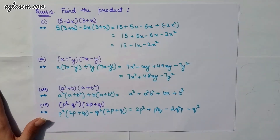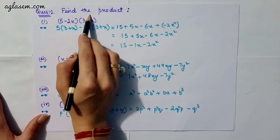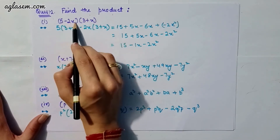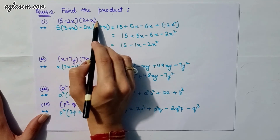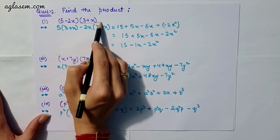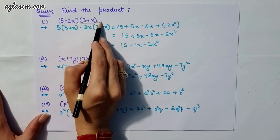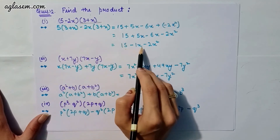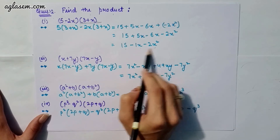Moving to the second question which says: find the product. The first part is (5 − 2x) and (3 + x). Again the same method — 5 will be multiplied by this whole bracket and minus 2x will multiply by this whole bracket. So our answer will be 15 − x − 2x².